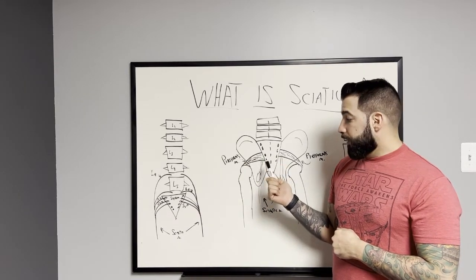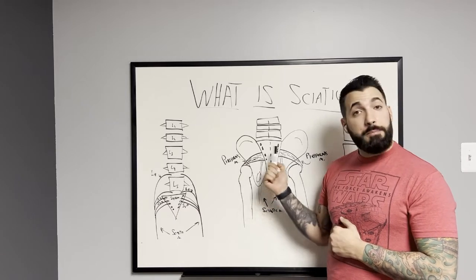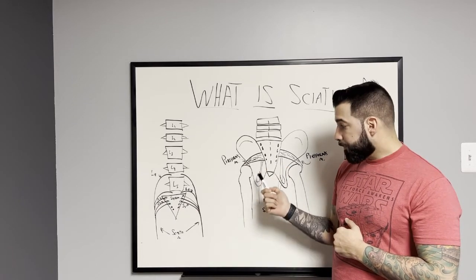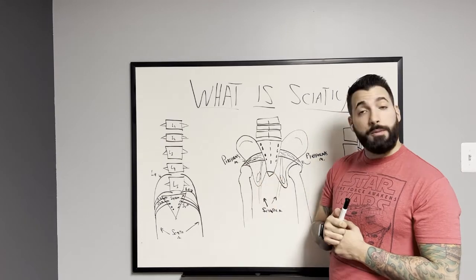So if you're starting to feel any type of sciatic pain, meaning pain down your leg or the side of your leg, it's generally coming from that piriformis muscle.